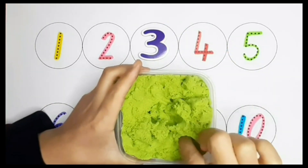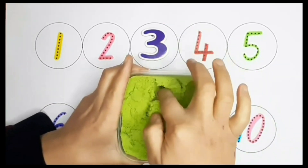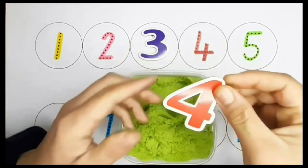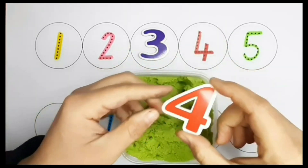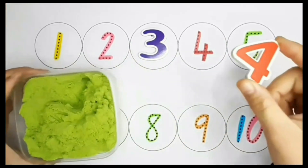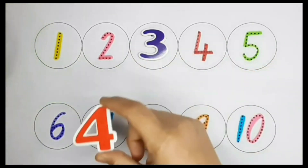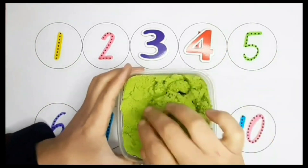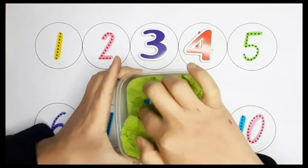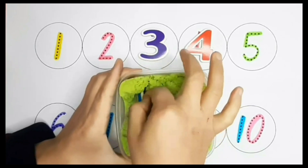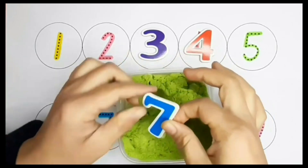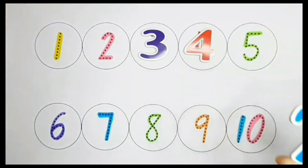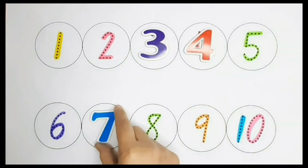Let's see which number is next. Number 4. Can you help me to find number 4? Yes, that's right. I wonder what the next number will be. It's number 7. Let's find number 7 on the board. Yes, that's right.